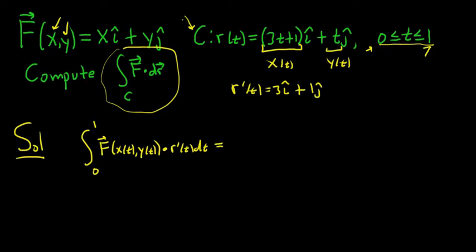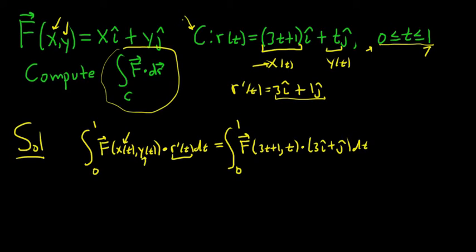So this is equal to the definite integral from 0 to 1. All right now we're going to plug this in here. So this is going to be, I'll write it like this, f of 3t plus 1 comma t dot and then we have 3 i hat plus j hat dt. All right just replacing r prime of t with what it is. I'm replacing x of t and y of t with what they are.